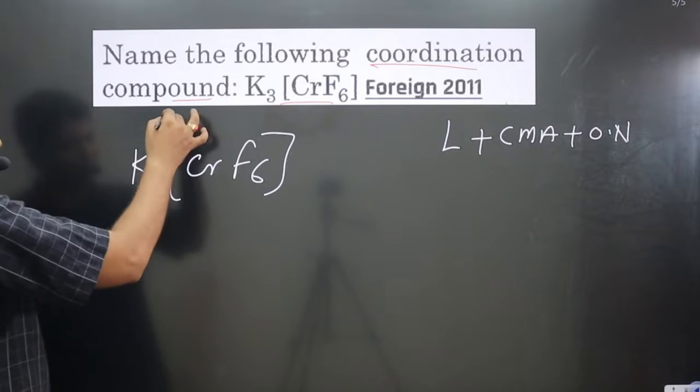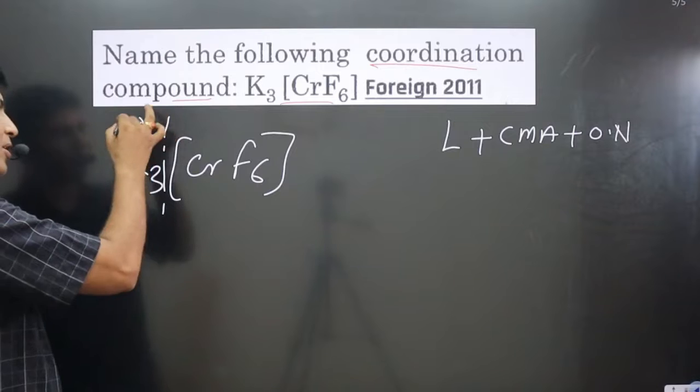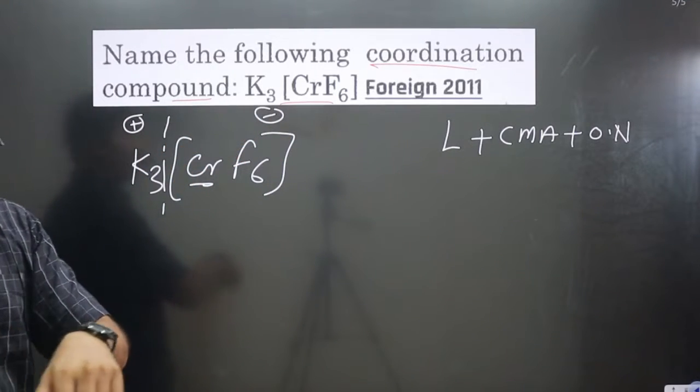The first one is always positive, the second one is negative. You can see this central metal atom is present in the anionic complex.